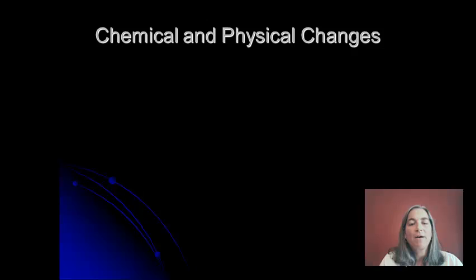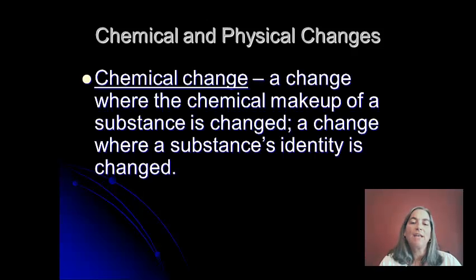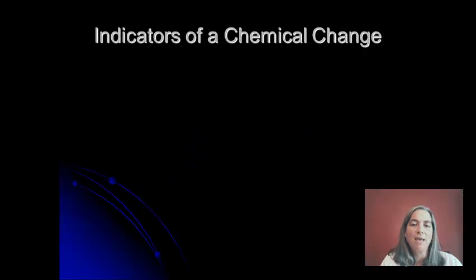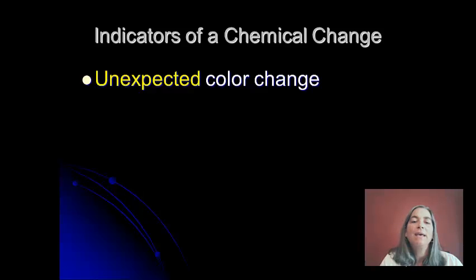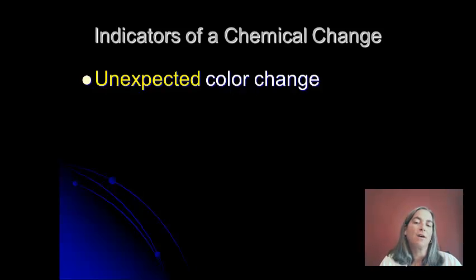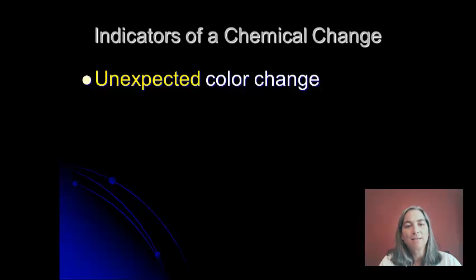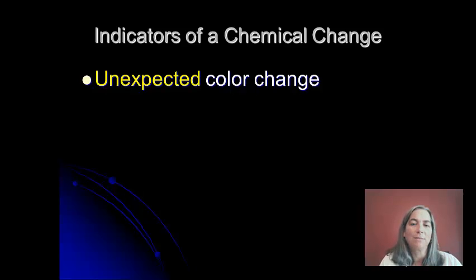A chemical change is a change where the chemical makeup of a substance is changed, so the identity of it is changed. Once you change its chemical structure, it's no longer the same thing. The way that we tell that a chemical change has occurred is we look for five things. The first would be an unexpected color change. So if you have a clear green liquid and add it to a clear colorless liquid, and it turns bright purple, that's an unexpected color change. If it just turns lighter green, that would be expected because you're just diluting it — so the unexpected color change is the indicator of chemical change.